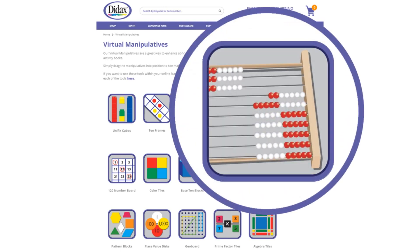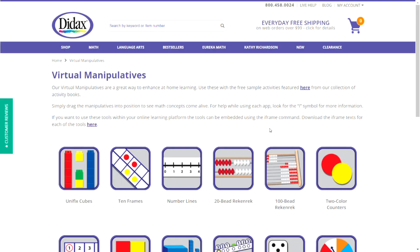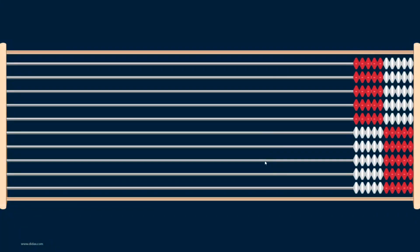Let's explore the 100-Bead Rekenrek tool. From my virtual manipulatives page, I'm going to click on the 100-Bead Rekenrek tool. This will open up the tool in a new window — it automatically sizes to fit the width of my window. So whatever you have there, or if you're embedding this into a webpage, keep that in mind with the width. You'll want it to be wide enough to easily fit these beads.